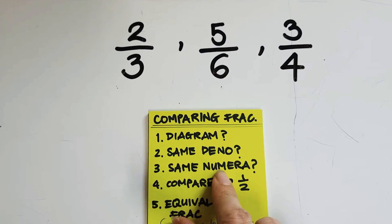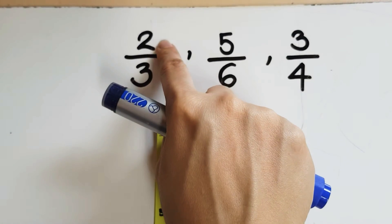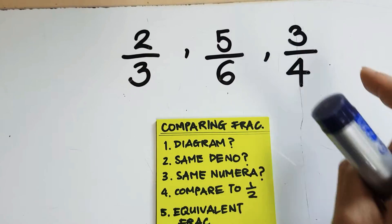Do they have the same numerator? Numerator 2, 5, 3? No, none of them are the same.